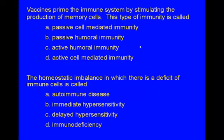Review questions: Vaccines prime the immune system by stimulating production of memory cells. This type of immunity is called: A — passive cell-mediated immunity, B — passive humoral immunity, C — active humoral immunity, or D — active cell-mediated immunity. The answer is C, active humoral immunity. Next: the homeostatic imbalance in which there is a deficit of immune cells is called: A — autoimmune disease, B — immediate hypersensitivity, C — delayed hypersensitivity, or D — immunodeficiency. The answer is D, immunodeficiency.